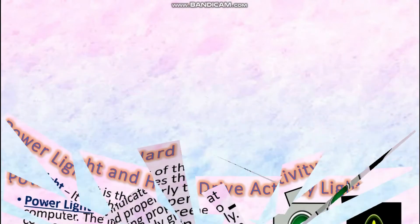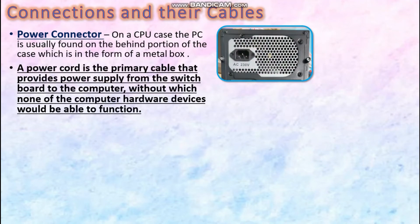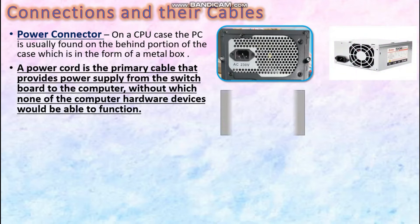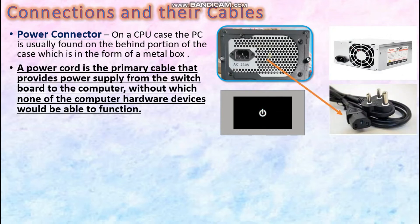Let us now get familiar with the connections and the cables of the CPU. The first one is Power Connector. The Power Connector is usually found on the behind portion of the CPU, which is in the form of a metal box. The power cable or power cord is the main cable which supplies power from the switchboard to the computer device, without which none of the computer hardware will function — for example, your keyboard, mouse, speakers, and so on. Every electronic device such as your TV, your desktop, your laptop, your refrigerator has a power cable.